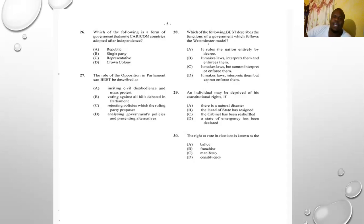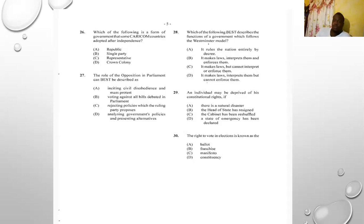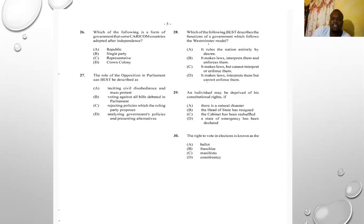Number twenty-nine: an individual may be deprived of his constitutional right if A) there is a natural disaster, B) the head of state has resigned, C) the cabinet has been reshuffled, D) a state of emergency has been declared. The answer is D. Under a state of emergency your human rights can be temporarily suspended — Jamaicans are familiar with this as states of emergency have been declared in several parts of the island. Number thirty: the right to vote in elections is known as A) ballot, B) franchise, C) manifesto, D) constituency. The answer is B) franchise.